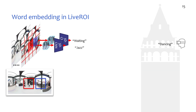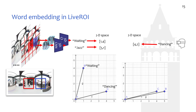Word embedding is a natural language processing technique that uses machine learning to learn the semantic meanings of a large number of words, and designs a multi-dimensional space to vectorize each word. For example, assuming word embedding uses two dimensions: 'dancing' is assigned (4, 2), 'waiting' is assigned (1, 4), and 'jazz' is assigned (5, 1). By calculating the cosine similarity, we can notice that 'jazz' and 'dancing' have a higher similarity value and are viewed as a matched pair because they are closer in the embedding space.